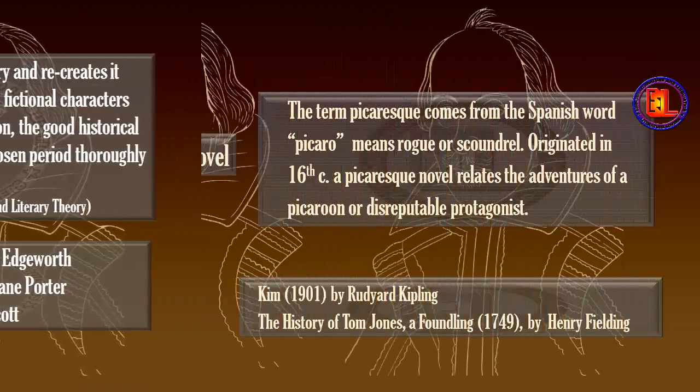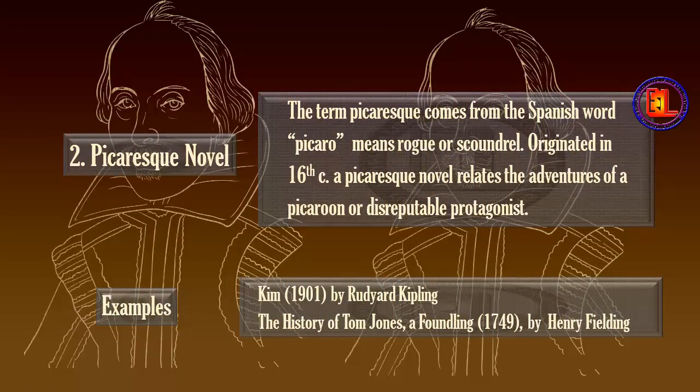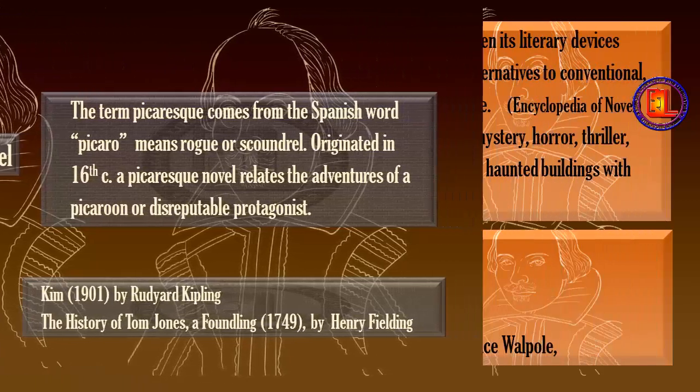Number 2: Picaresque Novel. The term picaresque comes from the Spanish word 'picaro,' which means rogue or scoundrel. Originating in the 16th century, a picaresque novel relates the adventures of a picaro, or disreputable protagonist. Examples are Kim by Rudyard Kipling and The History of Tom Jones by Henry Fielding.